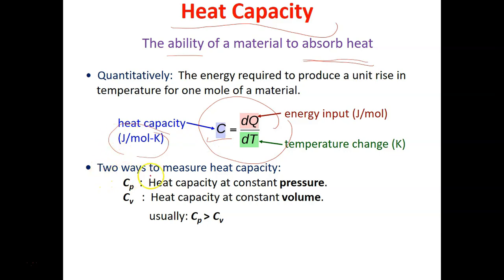So there are two ways to measure the heat capacity. The first one is the heat capacity at constant pressure. This is measured at constant pressure. And the second one is Cv, in which the heat capacity is measured at constant volume. So most of the time, Cp is always larger than Cv.